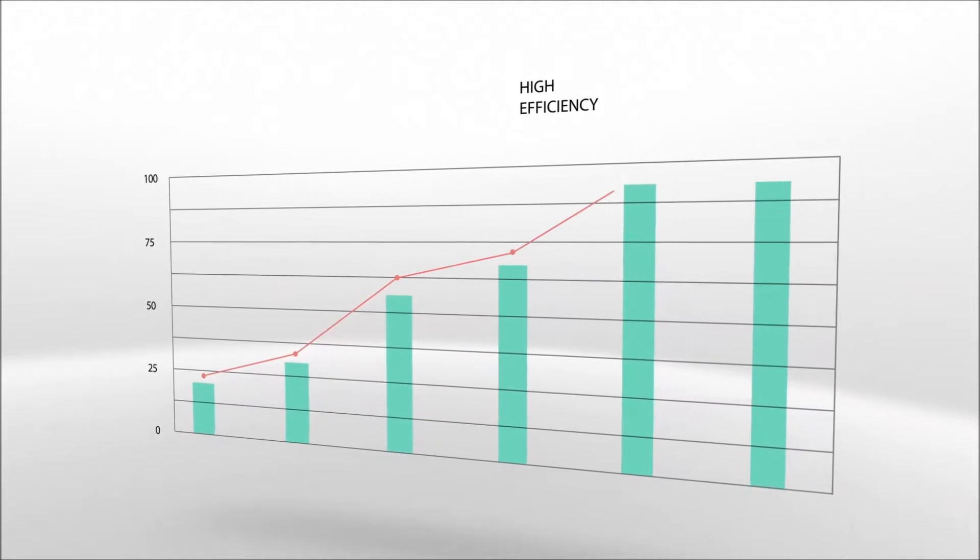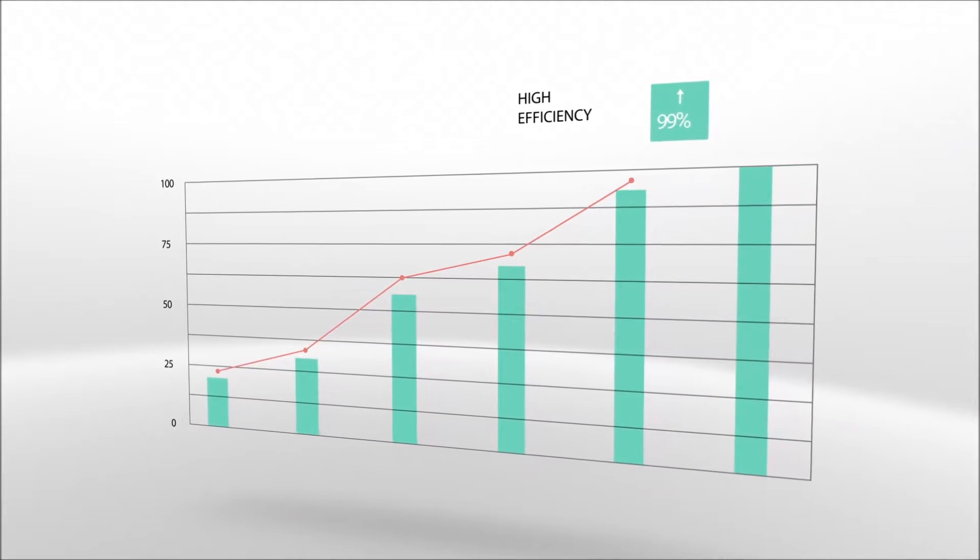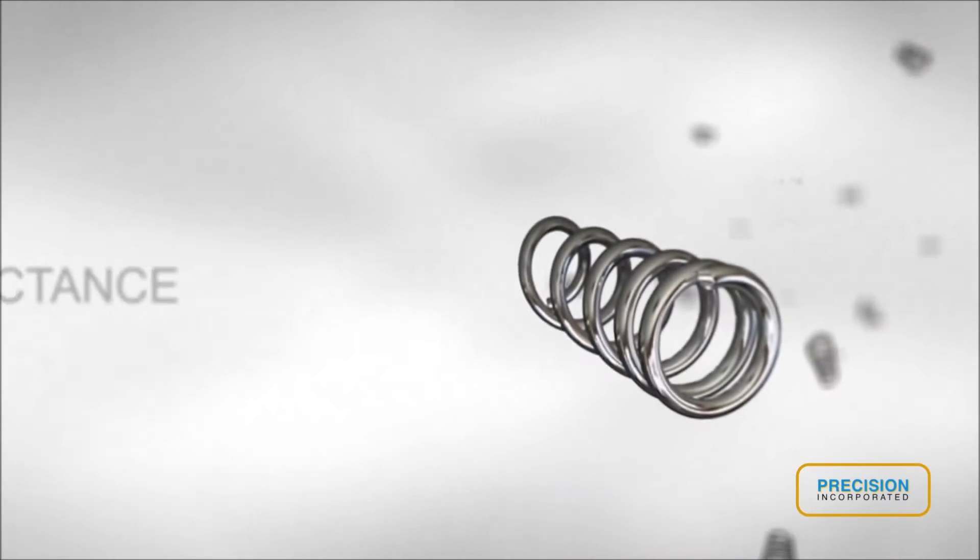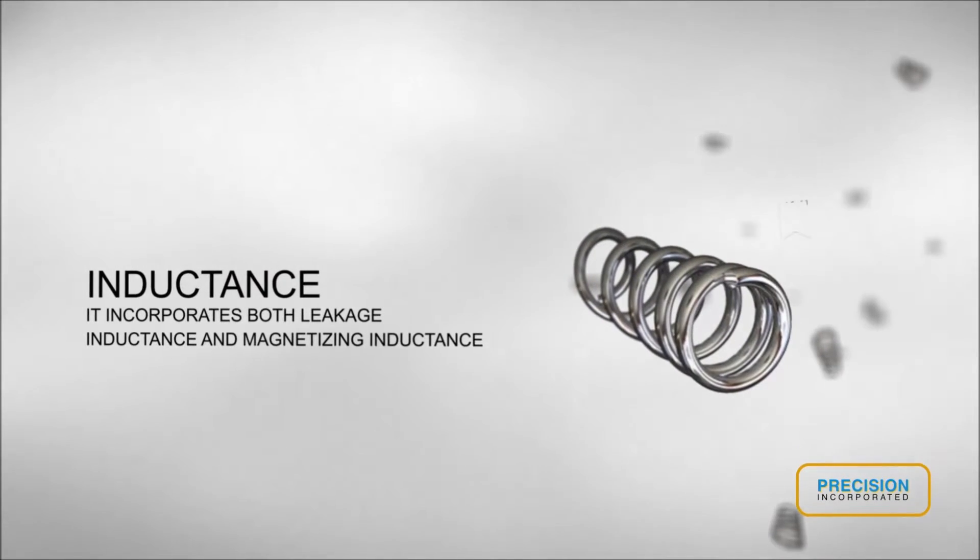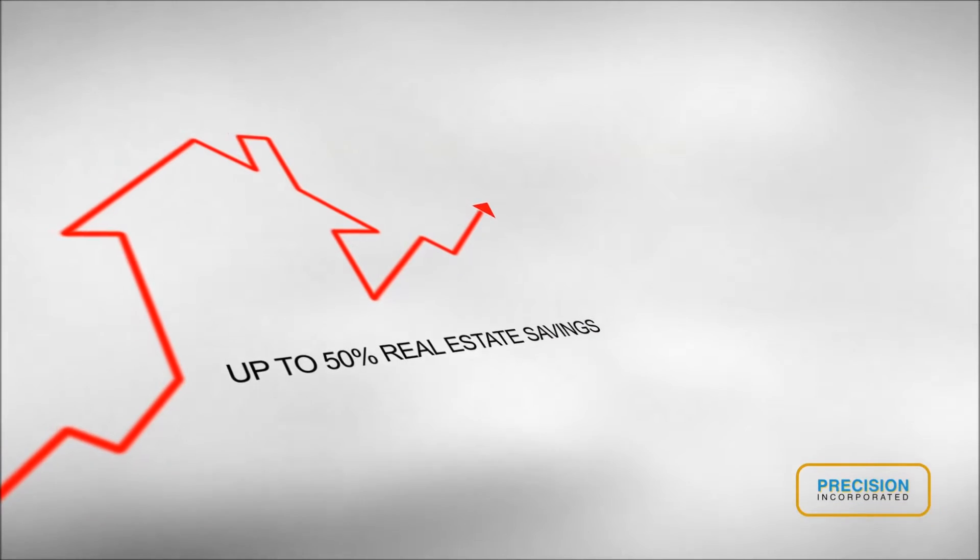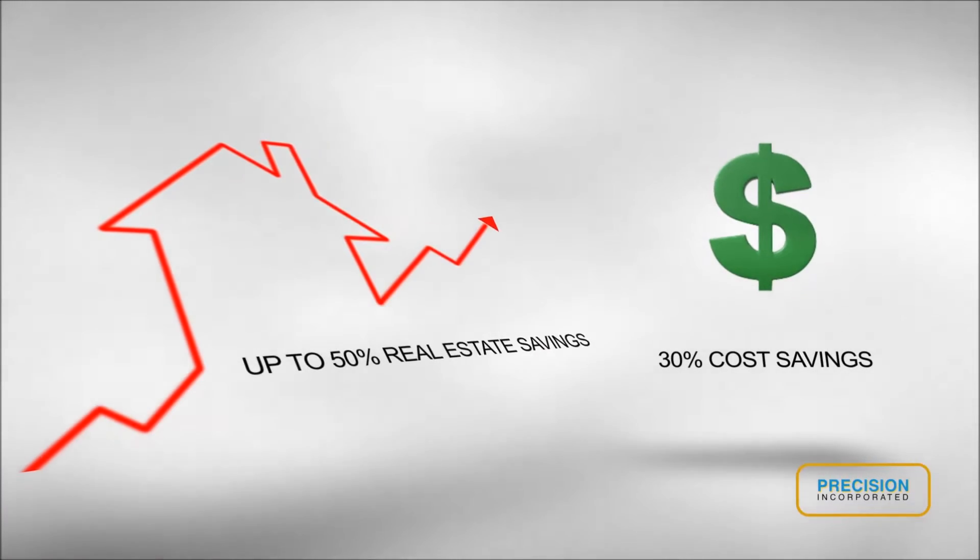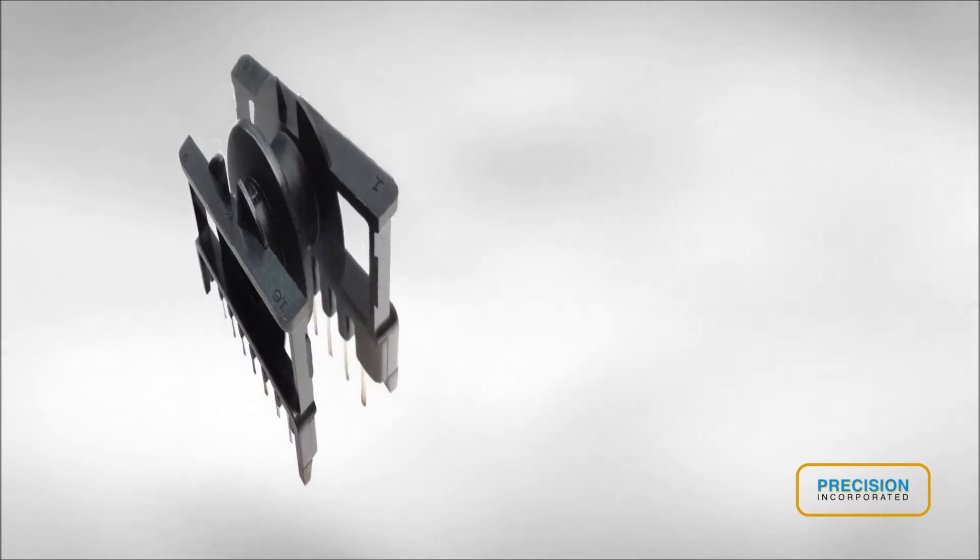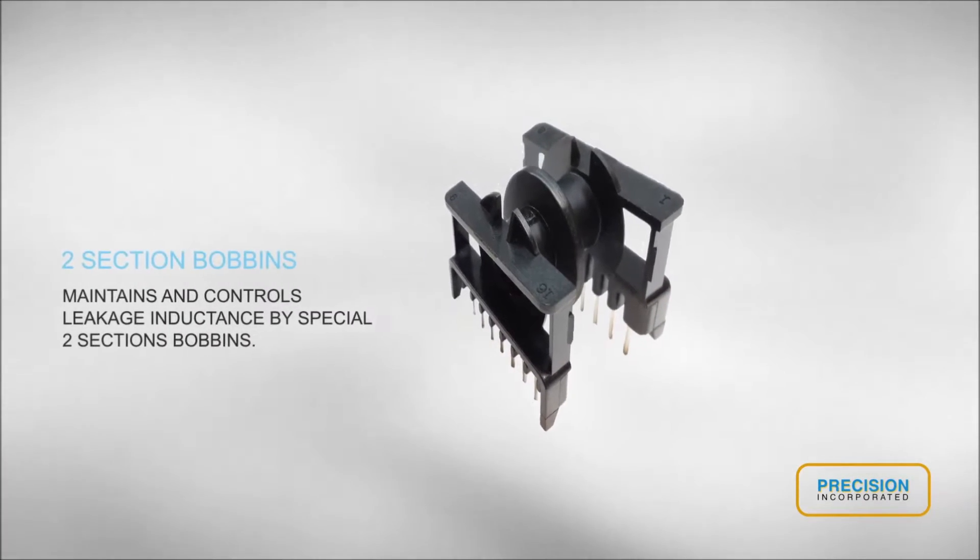The advantages of precision LLC transformers are its efficiency is high, up to 99%. It incorporates both linkage inductance and magnetizing inductance. They offer up to 50% real estate savings and 30% cost savings. Maintains and controls leakage inductance by special two-section bobbins.